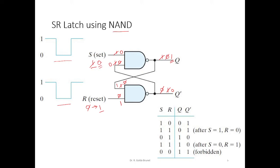So if we remove the input now — since it is active low input, when I say remove, S becomes 1. Since 1 and 1 is the combination of inputs to retain the information, we can see that the information will not be changed. Let's work that out: this 1 comes here and the input here is 0, so 1 and 0 is 0, NOT of 0 is 1, that 1 comes here, 1 and 1 is 1, NOT of 1 is 0. So the output of the circuit does not change even after you remove the input.